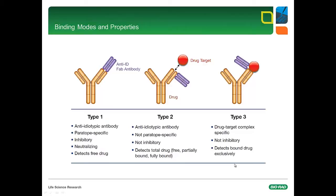Type 2 binds to an idiotope outside the antigen binding site of the drug. Therefore, it is not inhibitory and can be used to detect both free and bound drug in serum. The type 3 antibodies are a very special class of reagents. They are not anti-idiotypic but bind specifically to the complex of drug bound to its target. They neither bind the free drug nor the free drug target — only the complex is recognized. Consequently, they can be used to detect bound drug in serum and to quantify drug in serum without the need for establishing a bridging assay format.